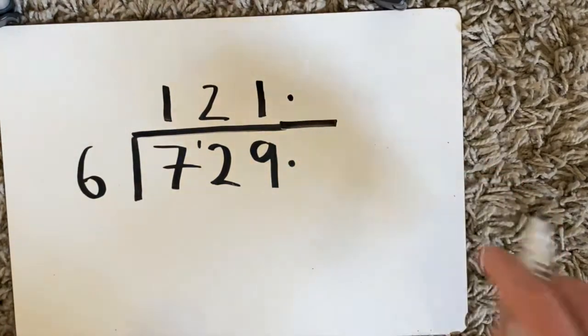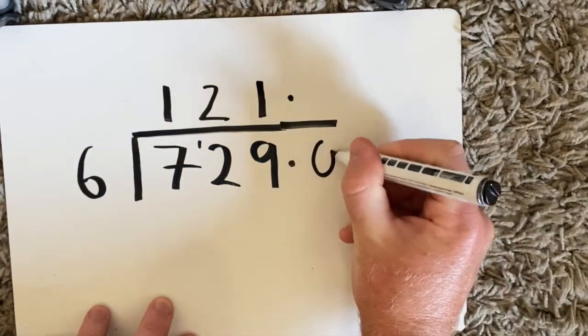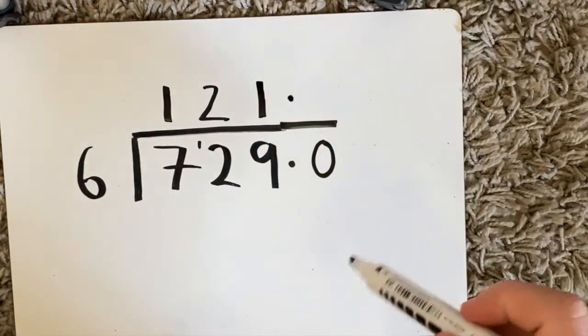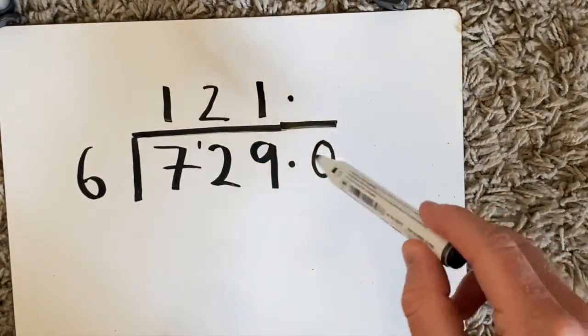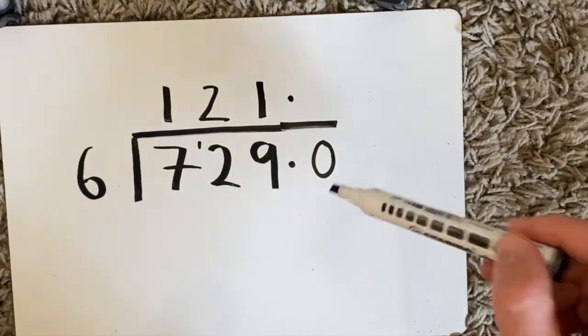I'm going to extend my bus stop and then put a zero down. Now this is the same no matter what question you do. A zero always goes down so that's something that you have to remember.